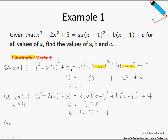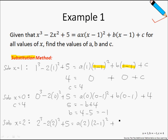We are left with the unknown a to be found. We can choose any value now — something nice and simple. There's no right or wrong value to choose; if you choose strategically, you can solve it faster. Let's substitute x equals 2. So: 2 cubed minus 2 times 2 squared plus 5 equals a times 2 times (2 minus 1) squared plus b times (2 minus 1) plus c, recalling that b is negative 1 and c is 4.